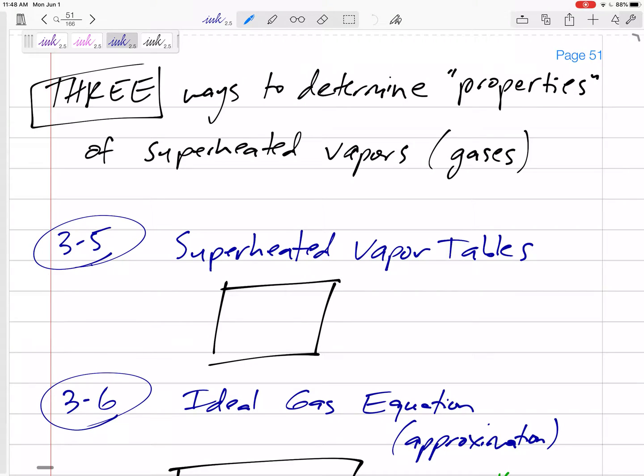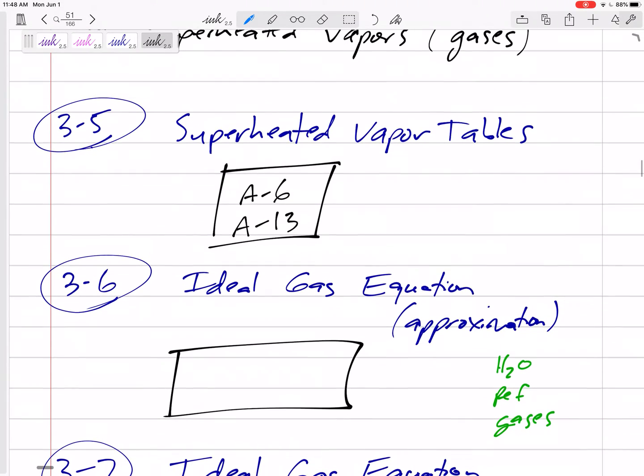All right, so let me pause and give an overview of where we've been and where we're going. Especially for superheated vapors, we can determine properties by what we've been doing, the superheated vapor tables. Table A-6, table A-13. A-6 if it's water, H2O, steam. Table A-13 if it's refrigerant. All right, so that is one method.